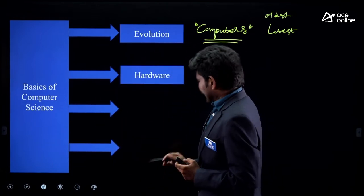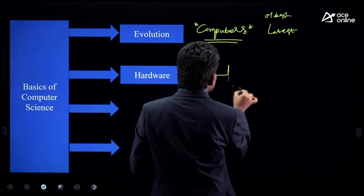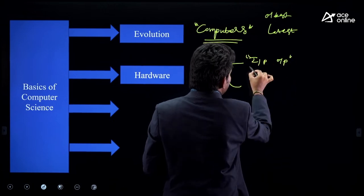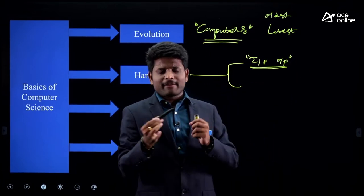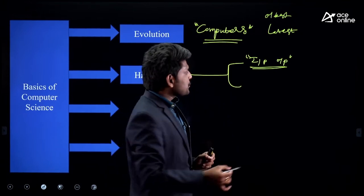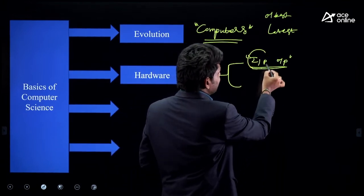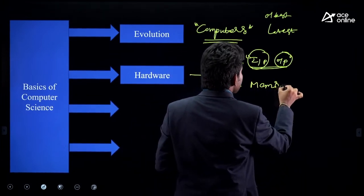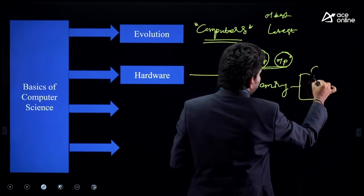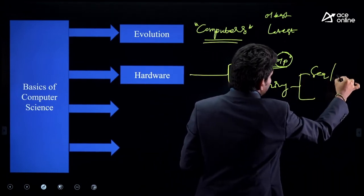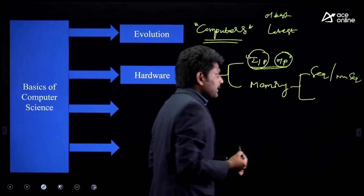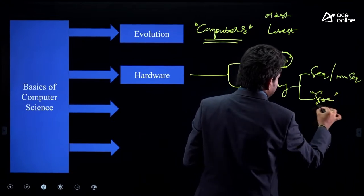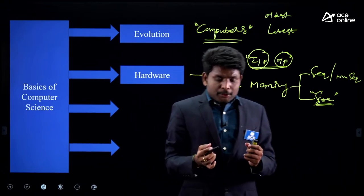The second chapter is hardware. Here we focus on input and output devices. The most frequent important question from this topic is: they will give you a device name, and based on the functionality, you should classify it as input or output device. Another topic is memory — the most important focus is the type of memory (sequential or non-sequential) and questions on size like terabyte, megabyte — units of memory.